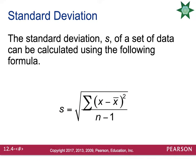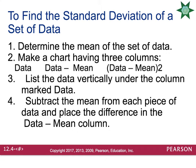The standard deviation s of a set of data is calculated step-by-step as follows. First, you need to know the mean of your sample — without the mean you can't get started. Then you make a chart with three columns: one titled 'data,' one titled 'data minus mean,' and one titled 'data minus mean squared.'